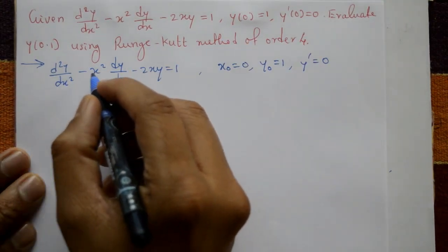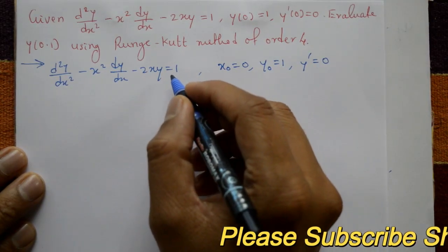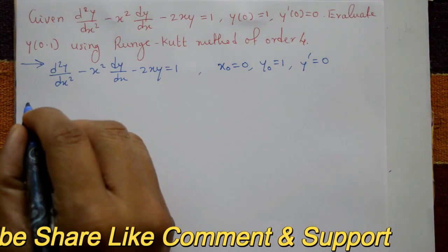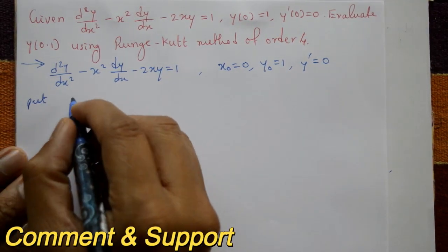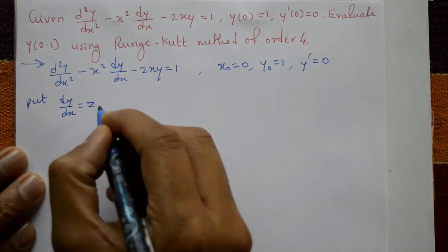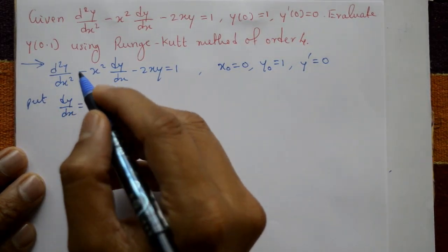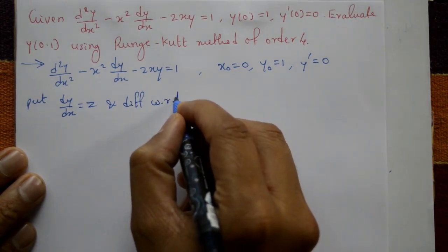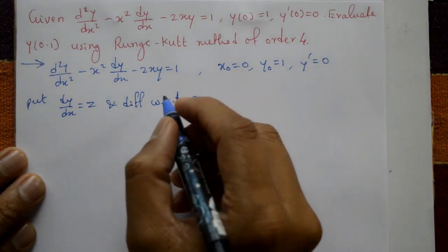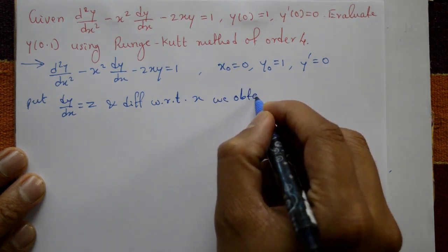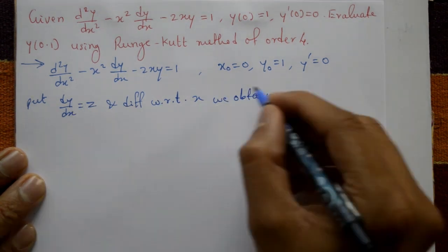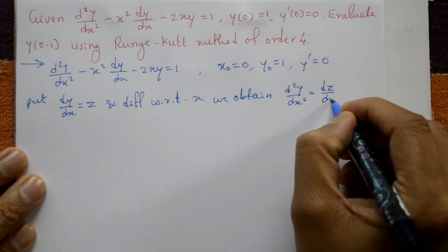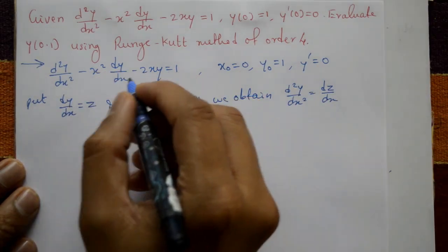This second-order differential equation is reduced into two first-order simultaneous equations. We put dy/dx equal to z, where x is the independent variable. Differentiating with respect to x, we obtain d²y/dx² equal to dz/dx.